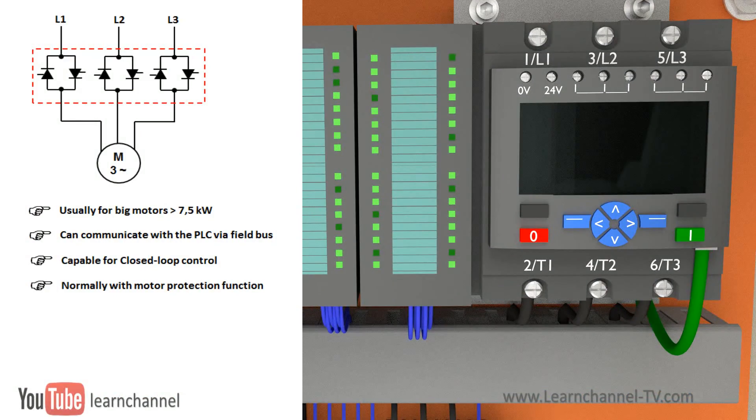The three-phase controlled soft starter generates a pure circular rotating field and is mainly used for bigger engines. Within the control circuit, it can fulfill more demanding tasks, can communicate with the PLC via a field bus, and build a closed-loop control. It is normally equipped with current limiting and motor protection function.